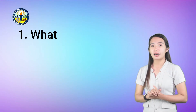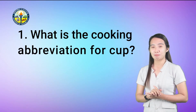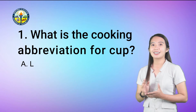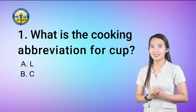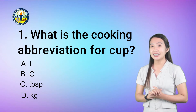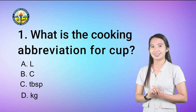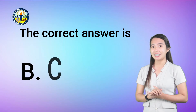You will identify the correct abbreviation for each unit of measurement. Number 1: What is the cooking abbreviation for cup? A. L, B. C, C. TBSP, or D. KG. The correct answer is letter B, C.